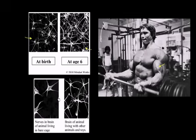Similarly, these are neurons of two different scenarios. This shows the nerves of animals that were in unstimulating environments, where they're not around other animals, they're in a bare cage.